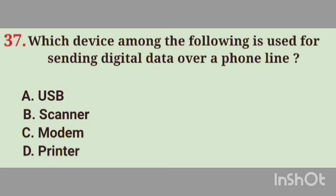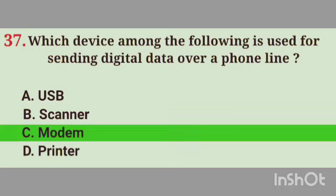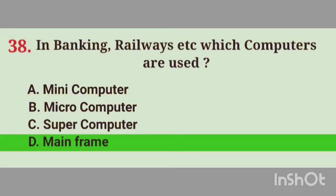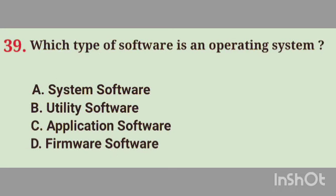Question No. 37. Which device among the following is used for sending digital data over a phone line? Right answer, Option C. Modem. Question No. 38. In Banking and Railway ATC, which computers are used? Right answer, Option D. Mainframe computer.